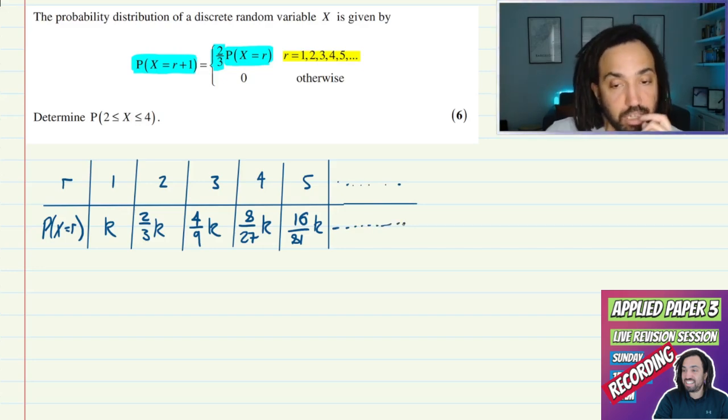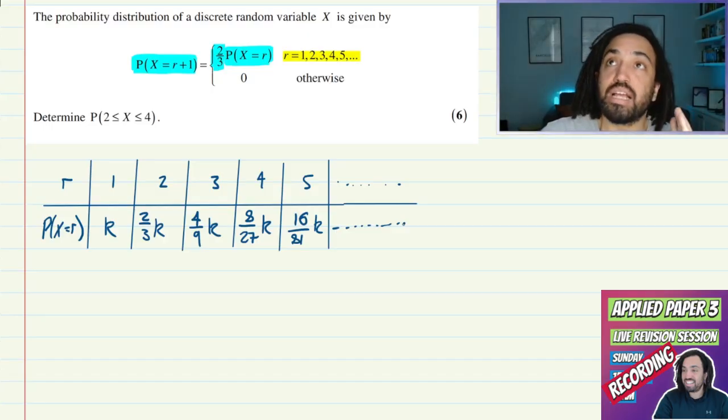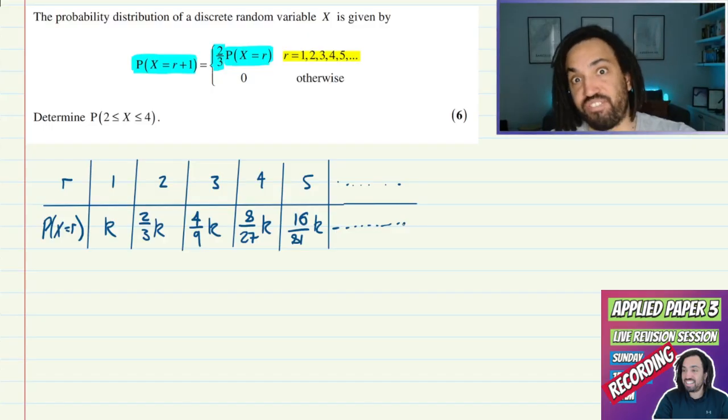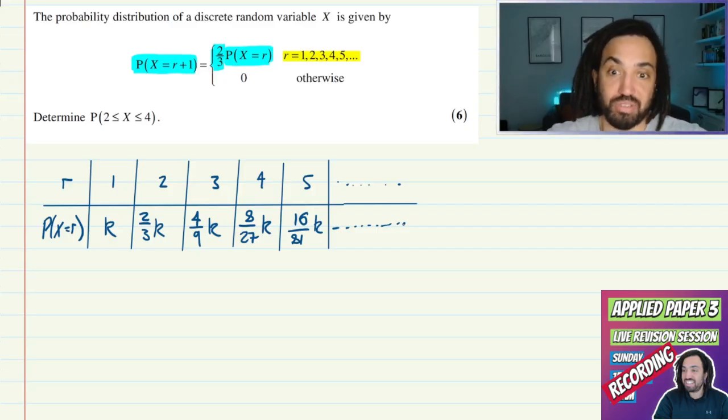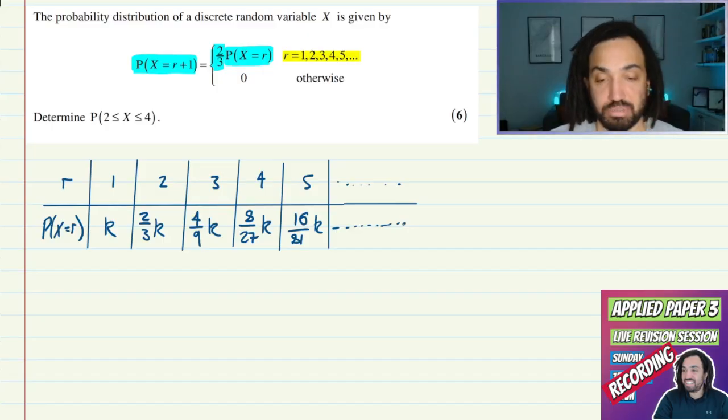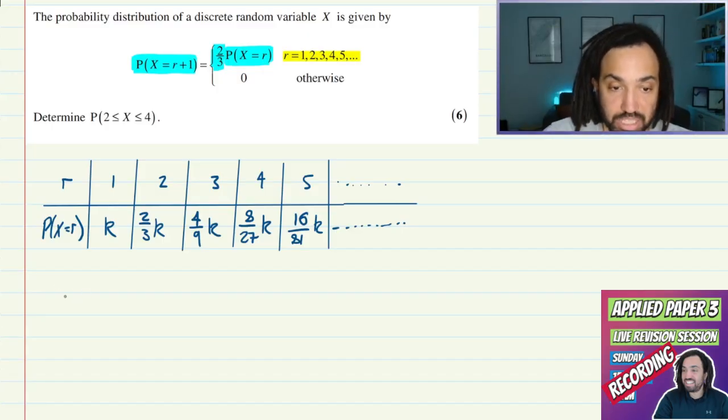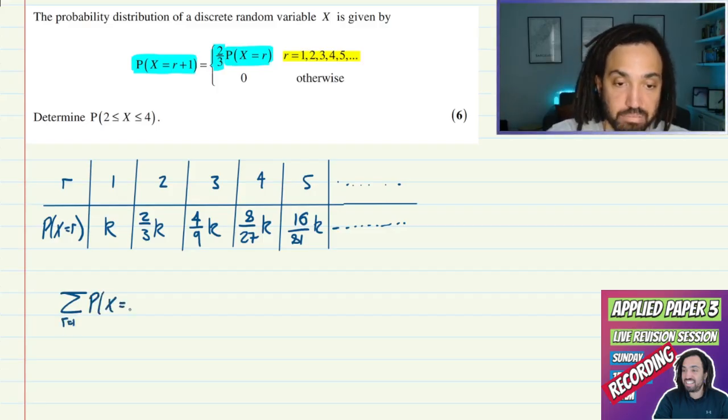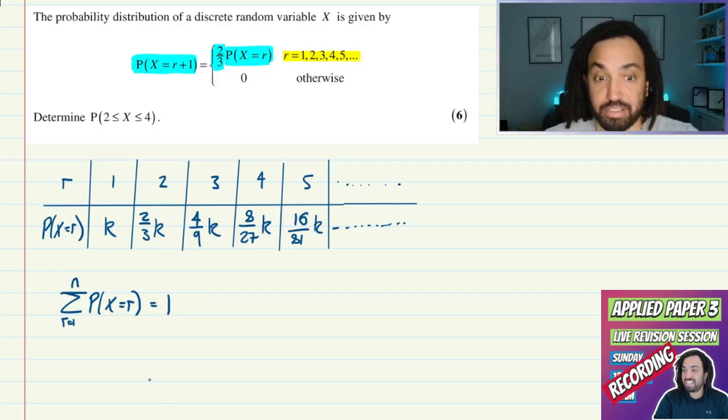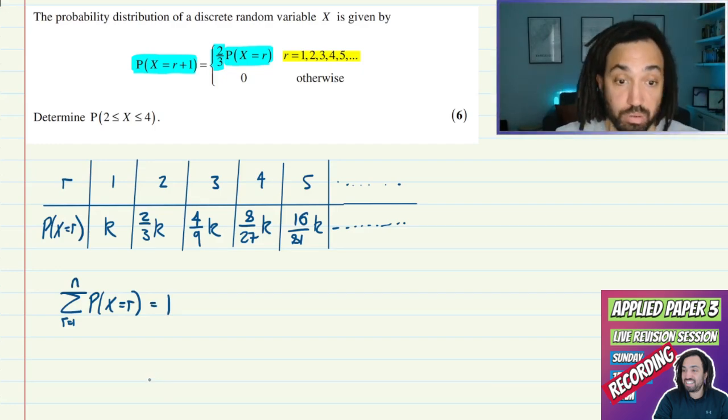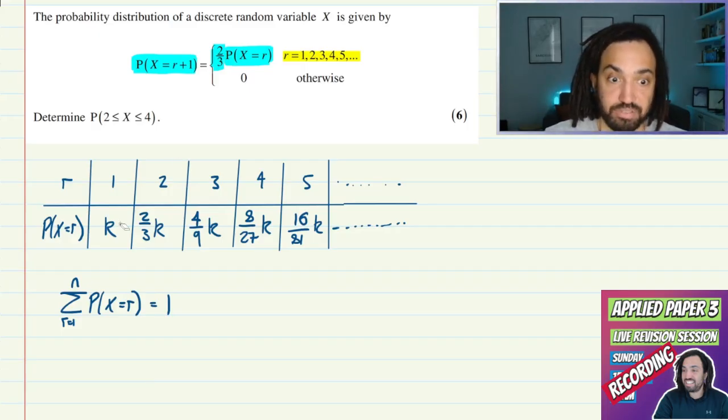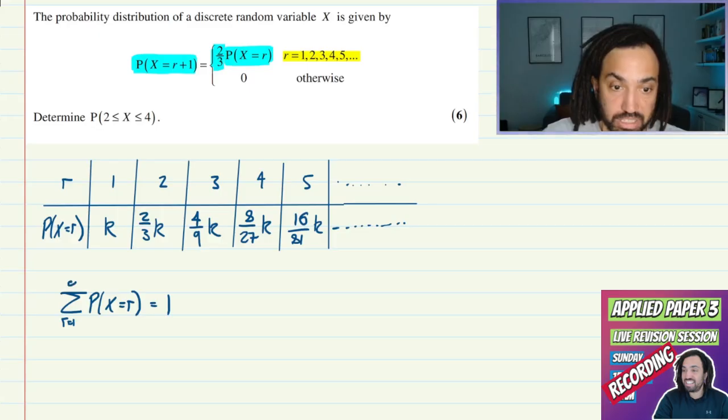So what else do we know about a probability distribution table like this? What is the fundamental rule that we use pretty much every time we see a discrete random variable distribution like this? Well that is of course that the sum of the probabilities starting with the first one is going to equal one. In this instance there isn't a fixed number of probabilities - in fact we're going to be summing up to infinity because there's an infinite number of probabilities here.